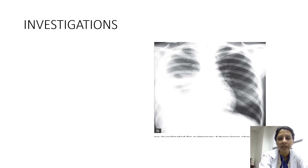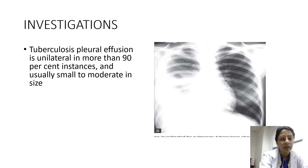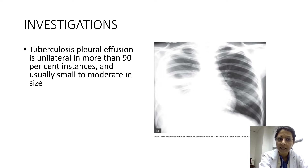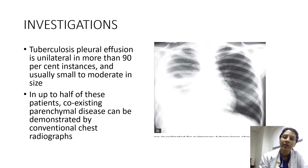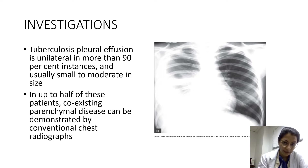How do we investigate a suspected case of pleural effusion? The initial investigation of choice is a chest X-ray. Tuberculosis pleural effusion is unilateral in more than 90% of cases and is usually small to moderate in size. In up to half of these patients, coexisting parenchymal disease can be demonstrated. The X-ray shows a homogeneous opacity occupying the right middle and lower zones with blunting of the costophrenic angle.